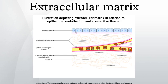Laminins are proteins found in the basal laminae of virtually all animals. Rather than forming collagen-like fibers, laminins form networks of web-like structures that resist tensile forces in the basal lamina. They also assist in cell adhesion. Laminins bind other ECM components such as collagens, nidogens, and entactins.